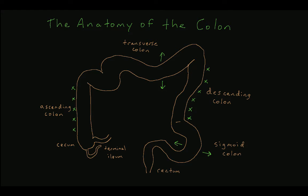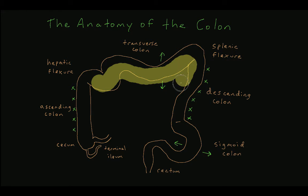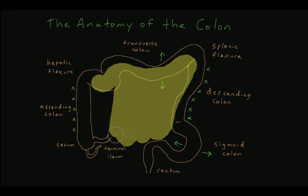The junction of the ascending colon and transverse colon is known as the hepatic flexure. The junction of the transverse colon and descending colon is known as the splenic flexure. The greater omentum is a double layer of peritoneum that is attached to the anterior superior aspect of the transverse colon.